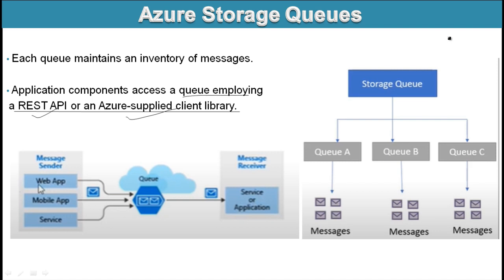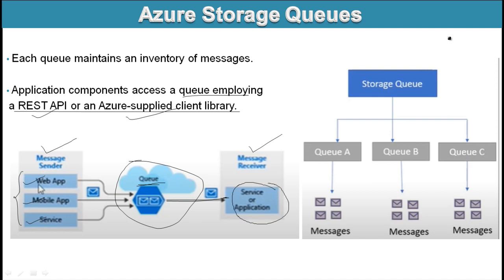As you can understand from the diagram, we have a sender and a receiver of messages. Once a sender sends a message, it gets stored in the cloud. Inside the cloud we have a storage — that is the queue. The message is received from a web application, mobile app, or services, and it is stored inside the queue in Azure, then sent back to the receiver side, where an application or service receives the messages.